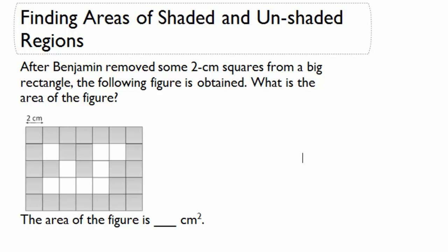Let's look at the whole rectangle first. This rectangle is 1, 2, 3, 4, 5 boxes by 1, 2, 3, 4, 5, 6, 7 boxes. If we have 5 by 7, that means that altogether, before Benjamin took any of the squares away, he had 35 squares.